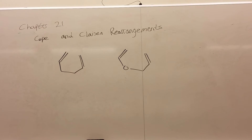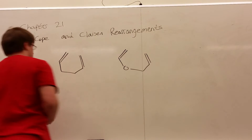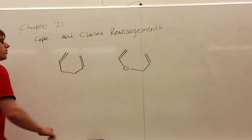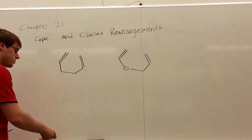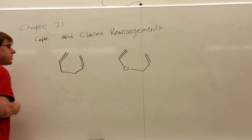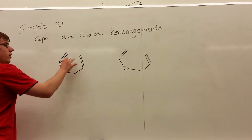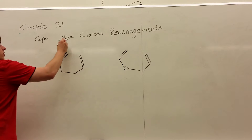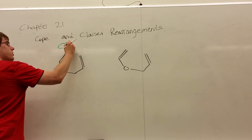Now let's talk about the Cope and Claisen rearrangements. Fortunately, these rearrangements are much easier to deal with than the Hoffman and the Curtis rearrangements from Chapter 20. Starting off, what are the reactants you should expect, and what should be over the arrow? Your reactants will typically involve the Cope rearrangement first.